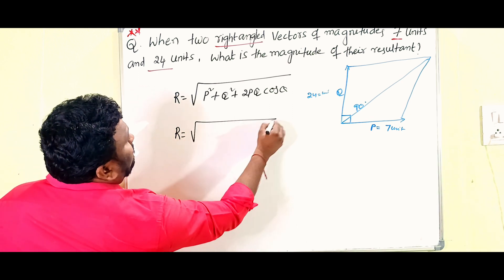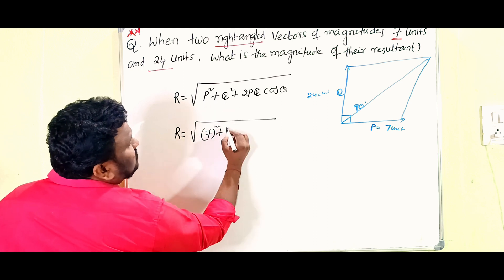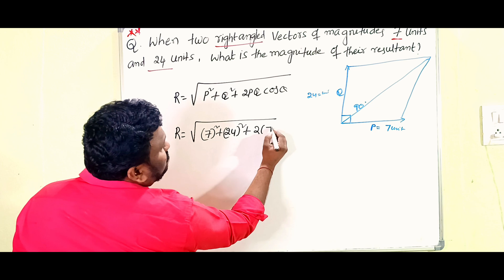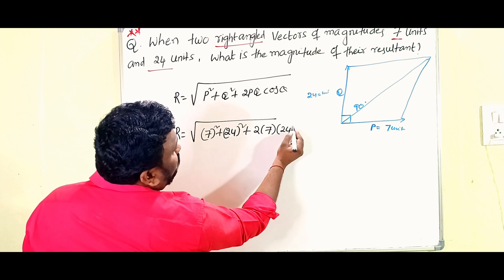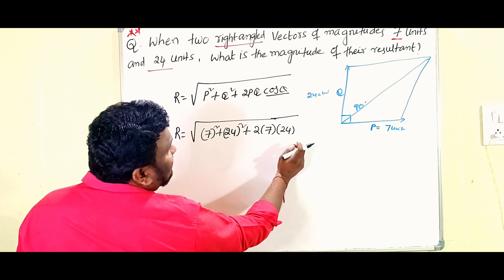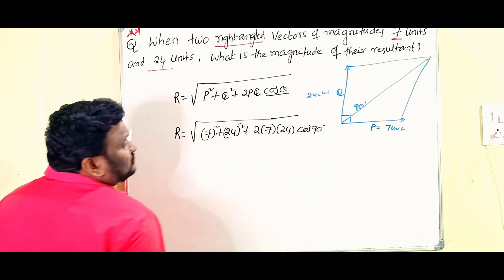R is equal to P value 7 whole square plus Q is 24 whole square plus 2 into 7 into 24, and the angle is 90 degrees. That's why here we are going to write cos 90.